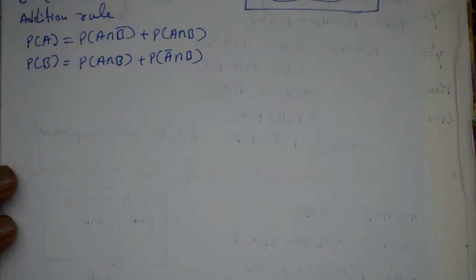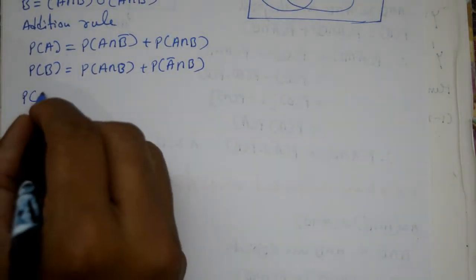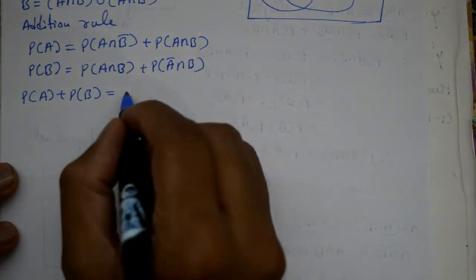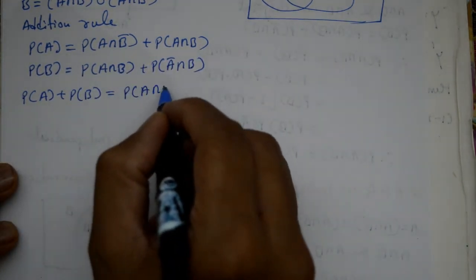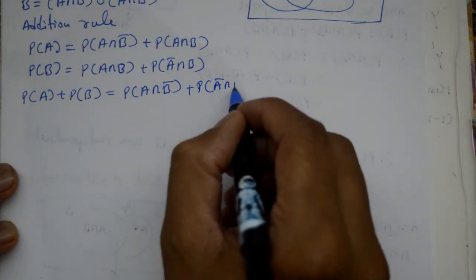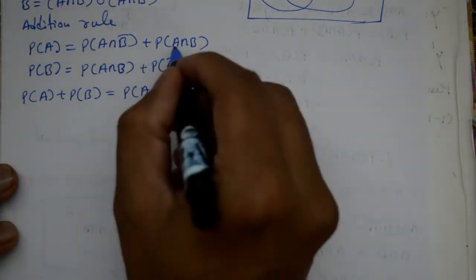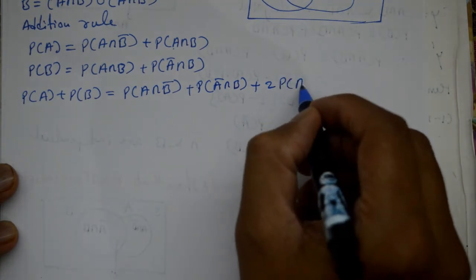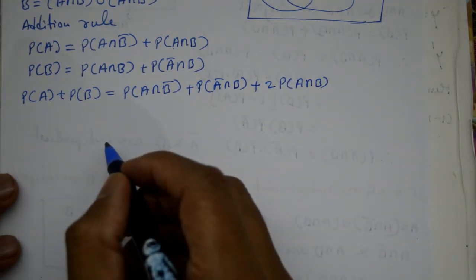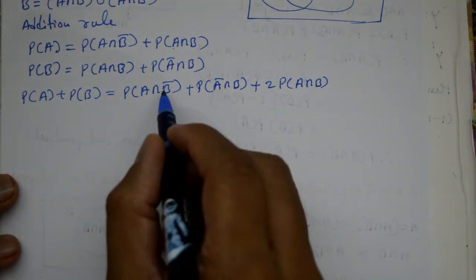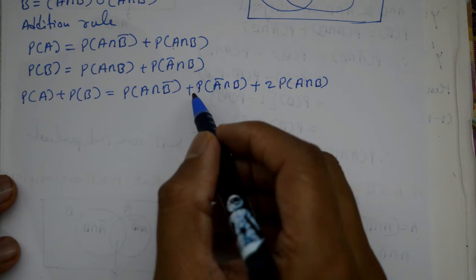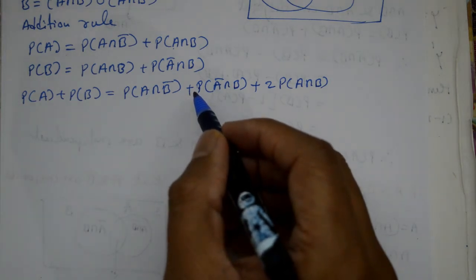Doonu ko add karenge. So adding these two: probability of A plus probability of B on the left hand side. Right hand side me: probability of A intersection B bar plus probability of A bar intersection B plus 2 times probability of A intersection B. A intersection B bar and A bar intersection B are disjoint.